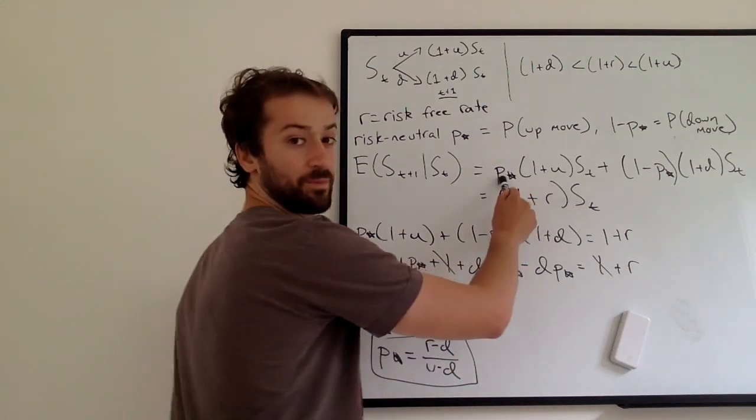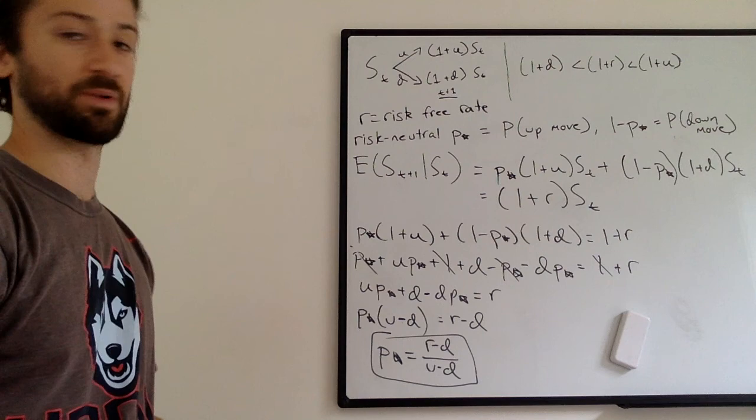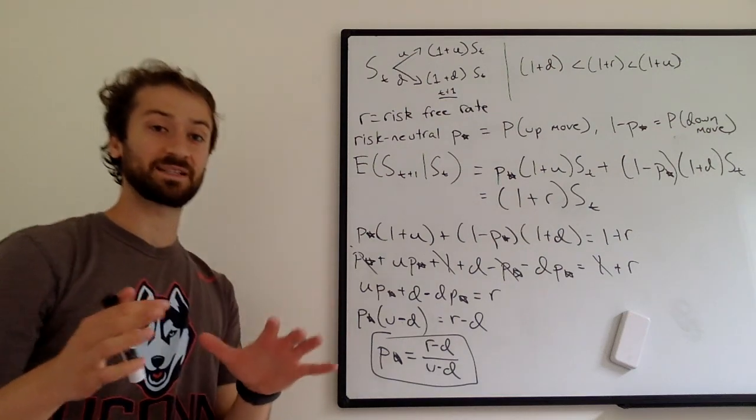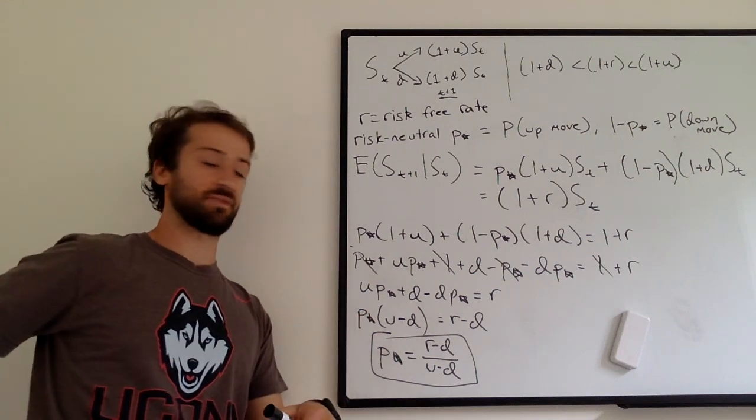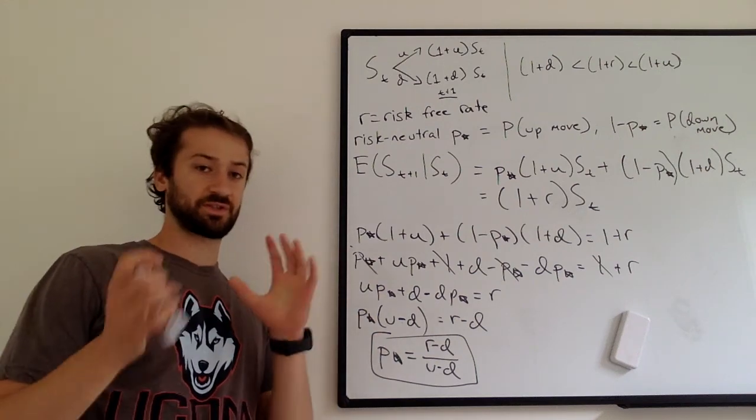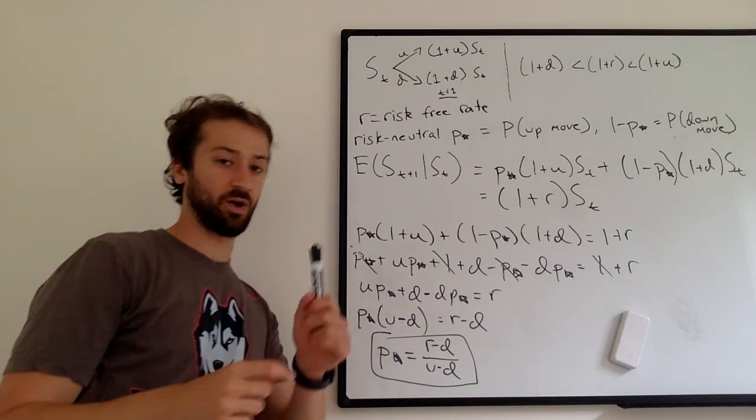It'll cancel. We basically just did the inverse of that while solving for it. We plug this into this, P star, P star, we're going to get 1 plus R S sub T. So in expectation, if this is the probability of the stock going up, it's going to be equal to investing just the S sub T dollars in the risk-free rate R.